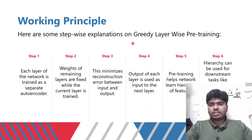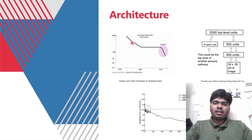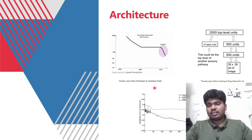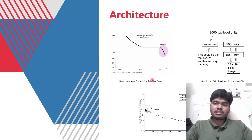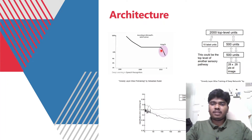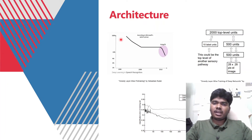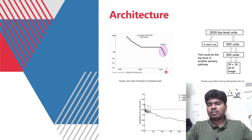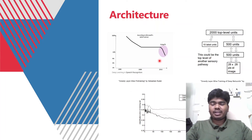This is a step-wise explanation for Greedy Layer-wise Pre-training, and here we can also see some pictorial representations and architectures collected from different research papers and presentations. Looking at the Greedy Layer-wise Pre-training by Sebastian Ruder: when we apply deep learning, the error recognition rate gets reduced. If the error is 100 percent we can't predict the output, so by using deep learning concepts we reduce the error.